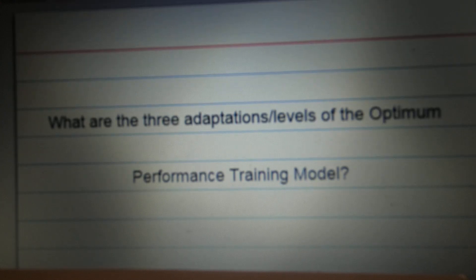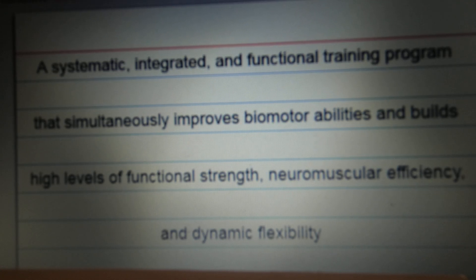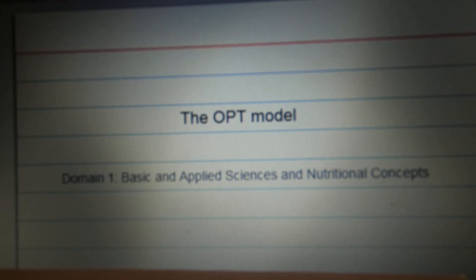What are three adaptation levels of the optimum performance training module? Stabilization, strength, and power. A systematic, integrated, and functional training program that simultaneously improves biomotor abilities and builds high levels of functional strength, neuromuscular efficiency, and dynamic flexibility. The OPT model.